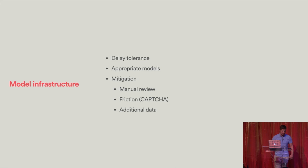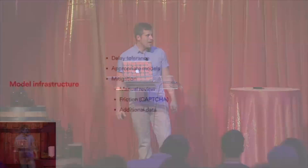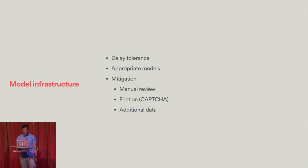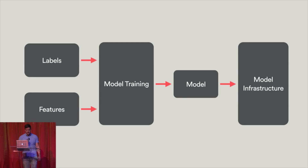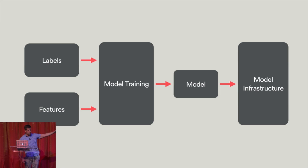When you're building out the system, you also need to build out infrastructure and figure out a couple of things. One is what's your delay tolerance — is it okay if you detect something 72 hours after it happens, or do you need to detect things in real time? What models do you want to run? There are many different machine learning models, from support vector machines to naive Bayesian classifiers. And then when you detect something that is fraudulent, what do you actually do about that? Do you send it for manual review? Do you introduce some friction like CAPTCHA to stop bots? Or do you require additional data so that you can be more confident in your decisions? You have the ground truth — the labels and the features — plug into a model training system that will produce a model, and that will go into your model infrastructure to score things in the future.